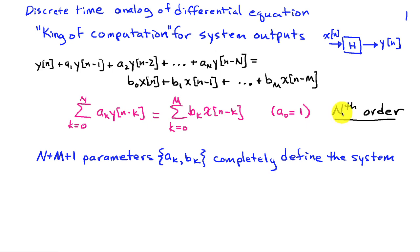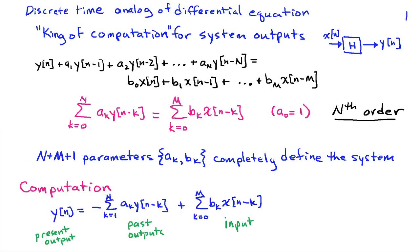What's really useful about this is that a total of n plus m plus one parameters—the a_k's and the b_k's—completely define the relationship between the input and output of this system. It's a very efficient representation; typically n and m are going to be relatively small for most systems we're interested in, somewhere in the 4 to 12 range.